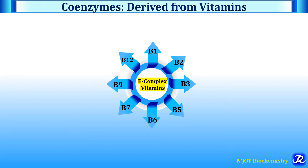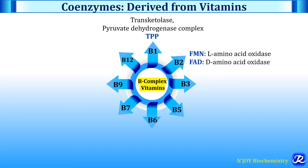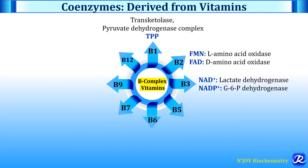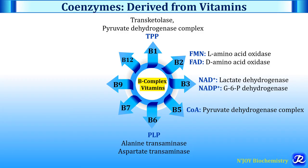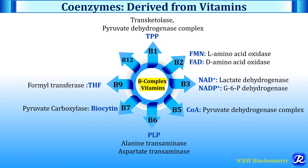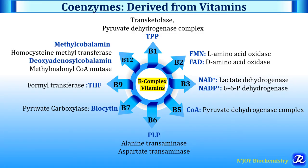Now let's enumerate the enzymes which require these coenzymes. Thiamine pyrophosphate is required by transketolase and pyruvate dehydrogenase complex. FMN is the coenzyme of L-amino acid oxidase. FAD is the coenzyme of D-amino acid oxidase. NAD+ is the coenzyme of lactate dehydrogenase. NADP+ is the coenzyme of glucose-6-phosphate dehydrogenase. Coenzyme A is the coenzyme of pyruvate dehydrogenase complex, required for conversion of pyruvate to acetyl-CoA. Pyridoxal phosphate is the coenzyme of transaminases like ALT and AST. Biocytin is the coenzyme of pyruvate carboxylase. Tetrahydrofolate is the coenzyme of formyltransferase. Methylcobalamin is the coenzyme of homocysteine methyltransferase, and deoxyadenosylcobalamin is the coenzyme of methylmalonyl-CoA mutase.